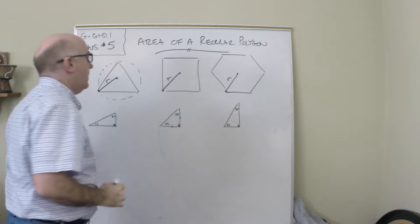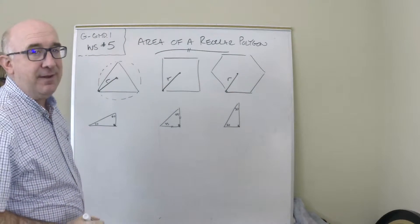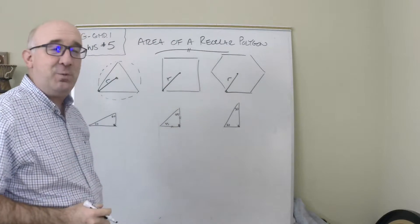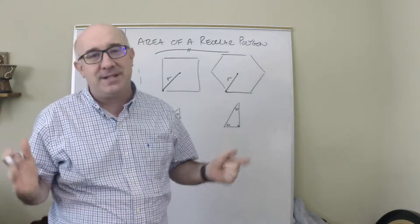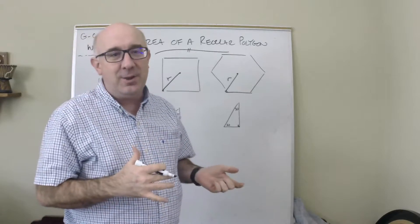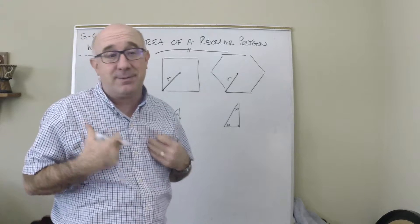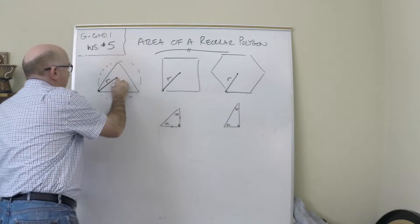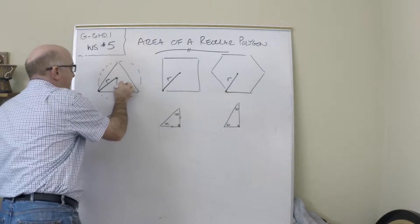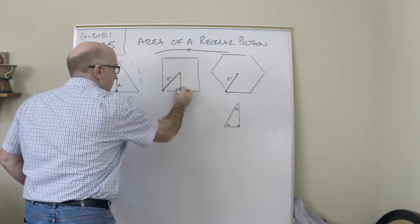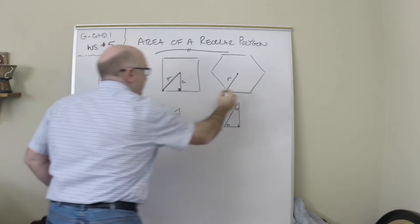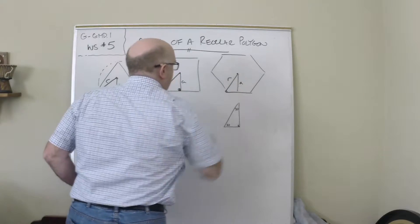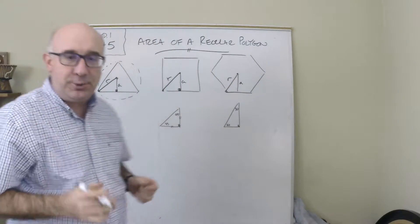The next thing that we have is an apothem, kind of a weird term. The apothem is the perpendicular line from the center to the side, center to the side, apothem.